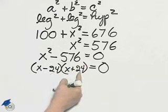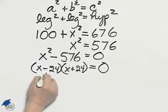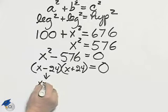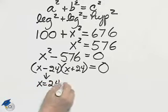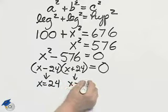24 times 24 equals 576. There seem to be two solutions: x being 24, and x being minus 24.